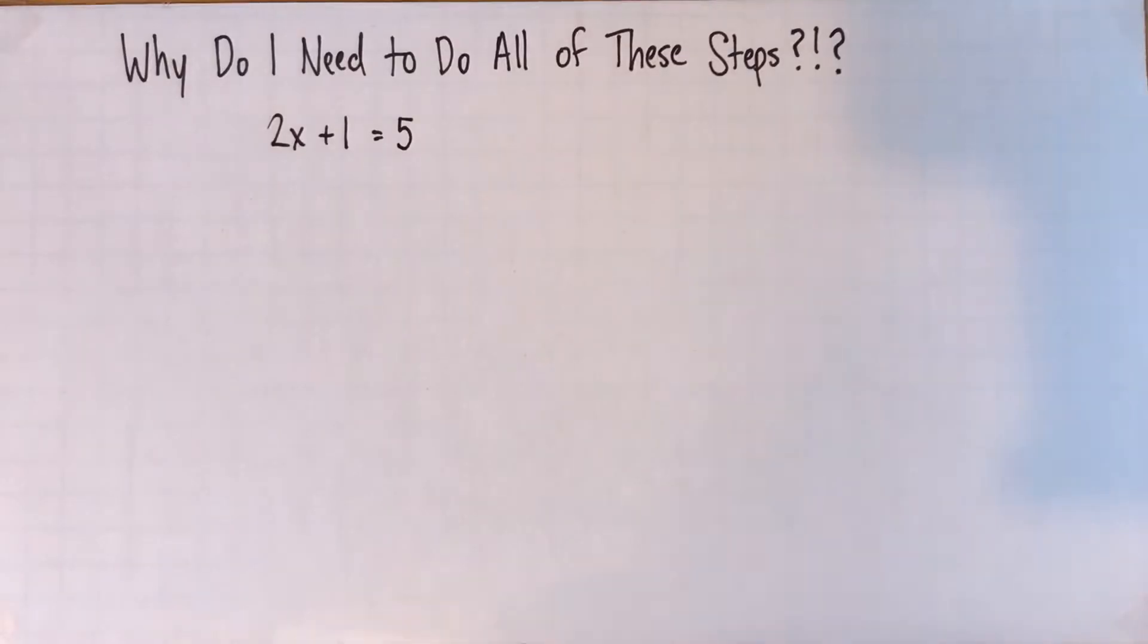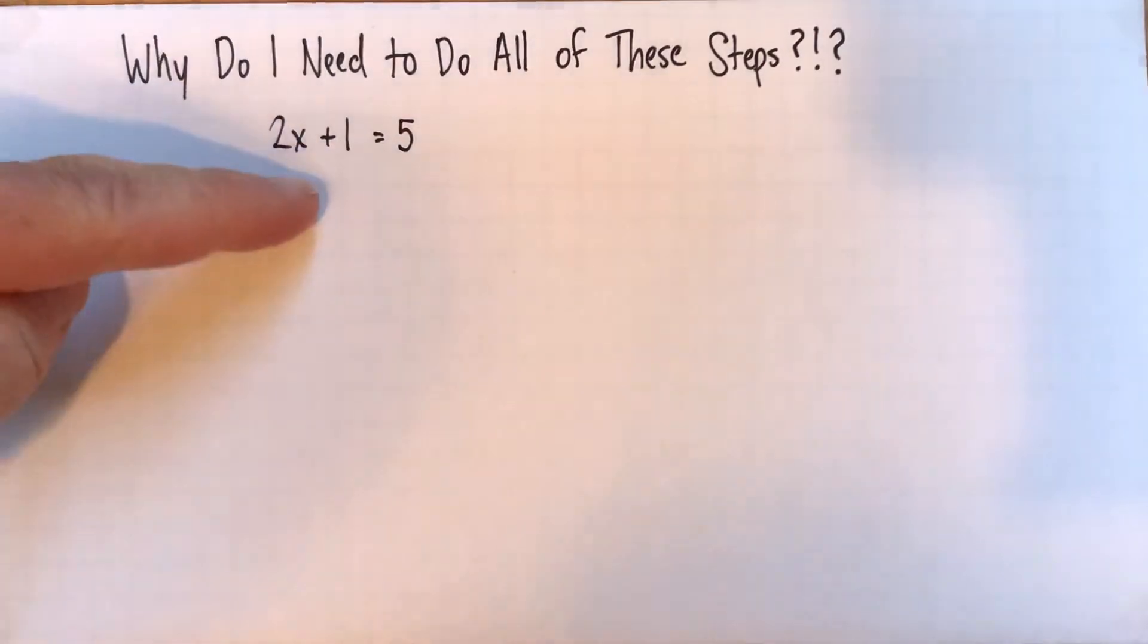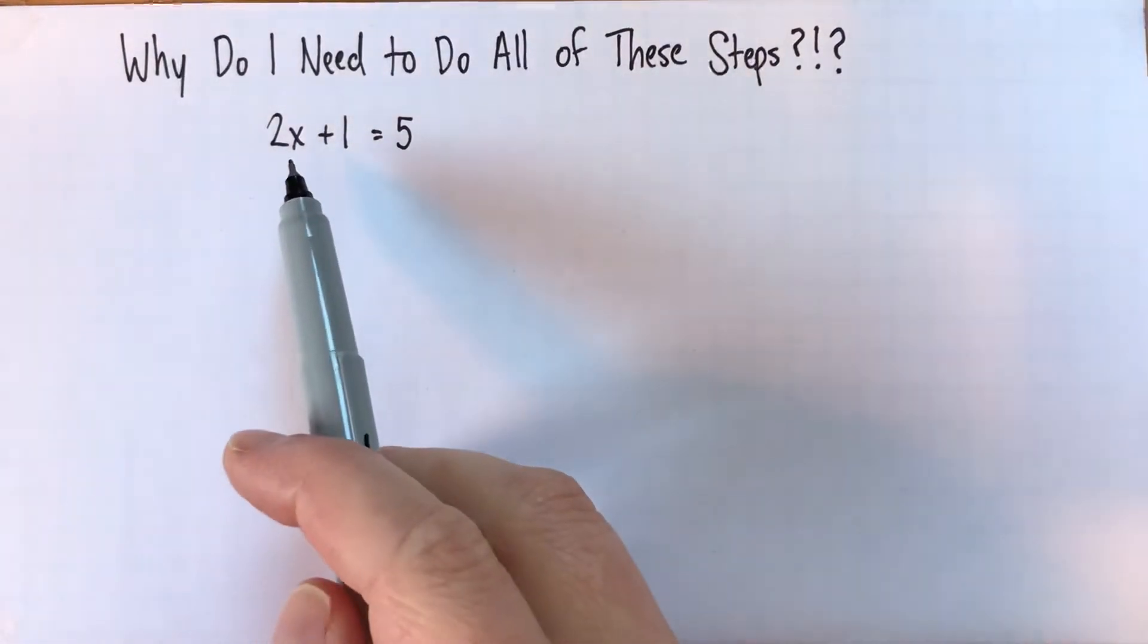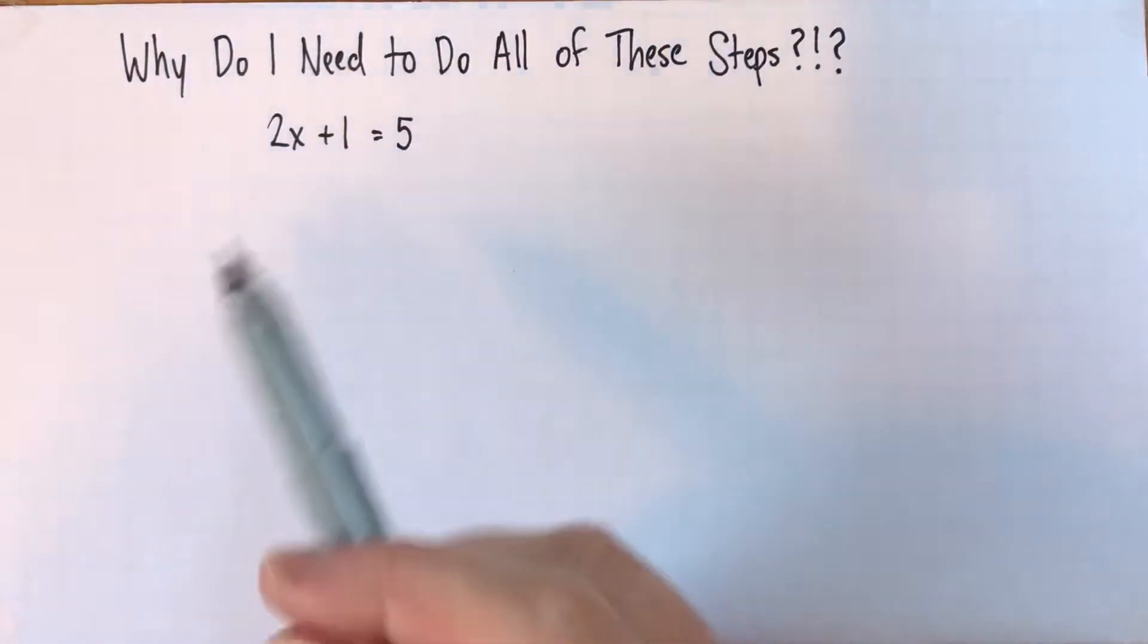And then their teacher, who might be me, asks them to write down five different steps, like five different lines of work to get the answer. And they're like, why? Why do I need to do all of this? I can tell the answer is 2, because 2 times 2 plus 1 equals 5.